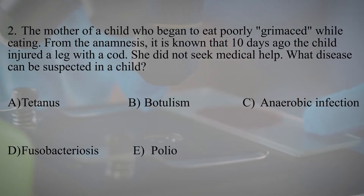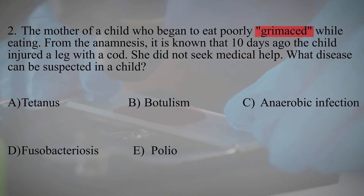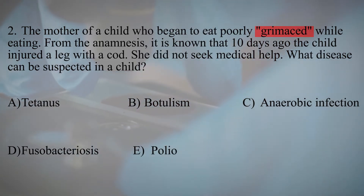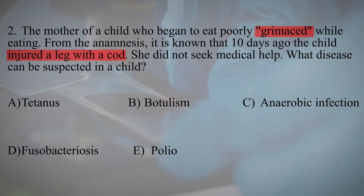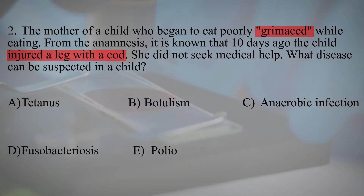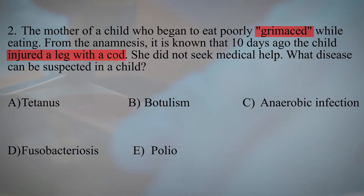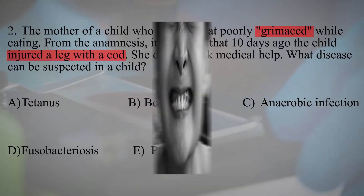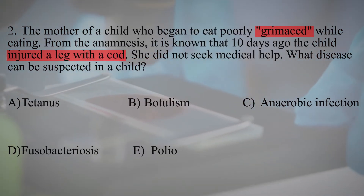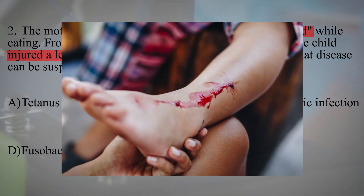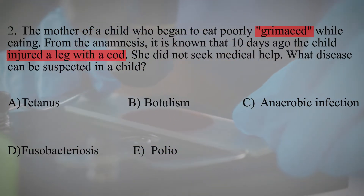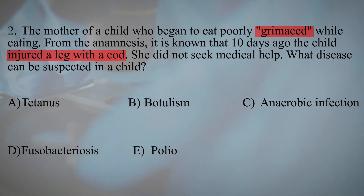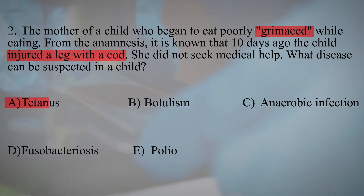The mother of a child who began to eat noticed the child grimaced while eating. From the history, it is known that 10 days ago the child injured a leg with a cot and did not seek medical help. The first keyword is grimace, because one of the first symptoms of tetanus is risus sardonicus. The next clue is the leg injury — spores enter the wound and under anaerobic conditions germinate into vegetative cells and produce tetanus spasmin. Therefore, the correct answer is tetanus.